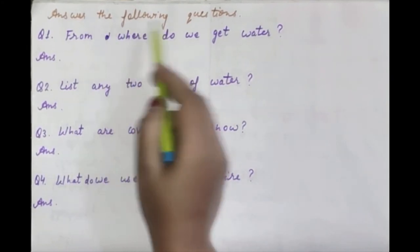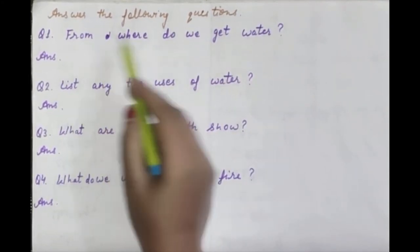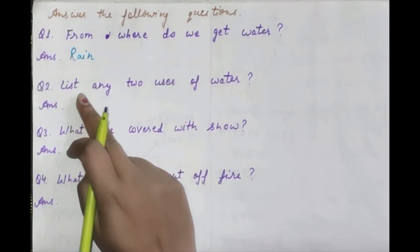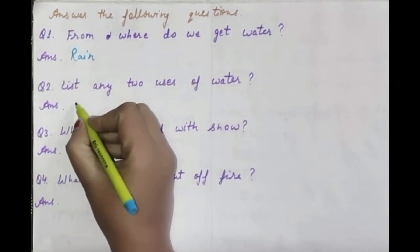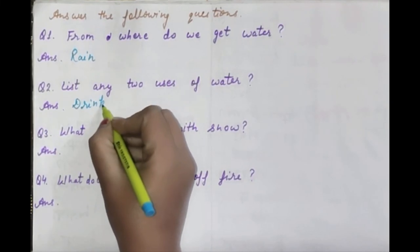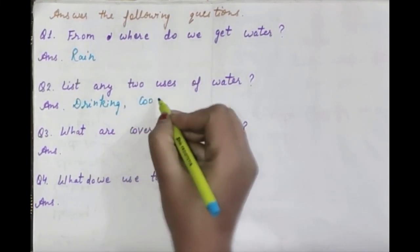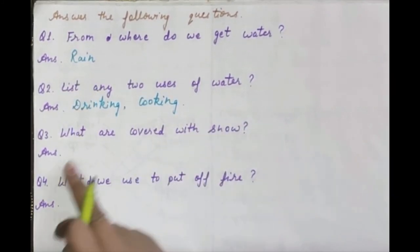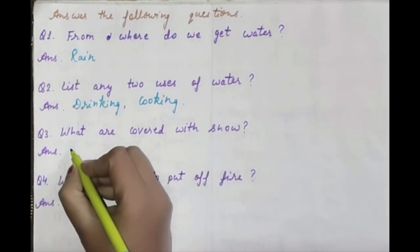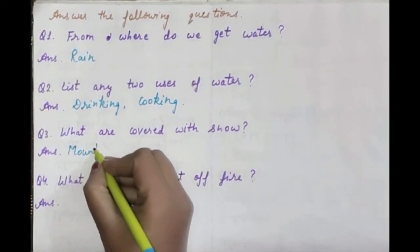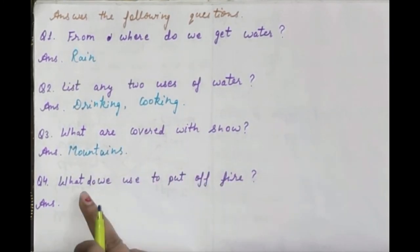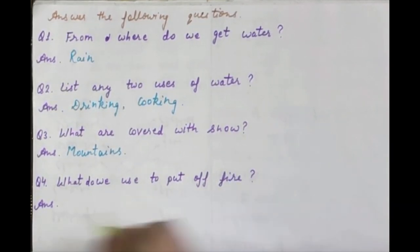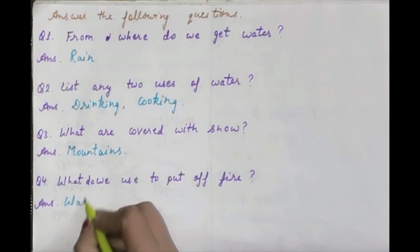Next comes answer the following questions. From where do we get water? Rain. List any two uses of water - drinking, cooking. What are covered with snow? Mountains. What do we use to put off fire? Water.